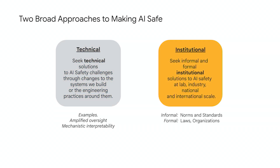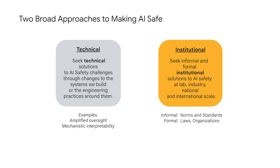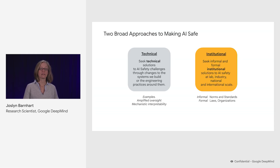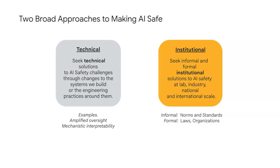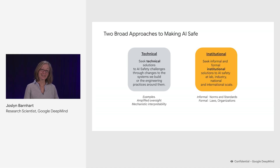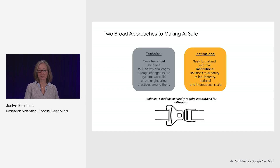By institutional, we mean quite a broad notion of both informal and formal social institutions that we might think of at the lab level, the industry level, or even the national and international levels. By informal institutions, we could mean anything from norms of behavior or standards of how an industry is expected to behave, or even more formal institutions like laws and organizations. The key takeaway is that technical solutions generally require institutions for diffusion — it is rare that you get to fully safe outcomes without social institutions to help diffuse safe practices.